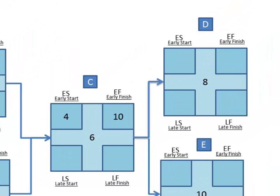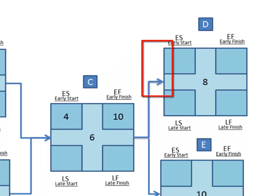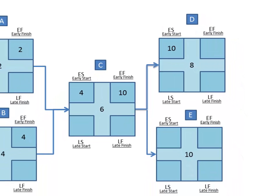So now we're up to Task D. D is waiting for Task C to finish, so the earliest D can start is day 10. This holds true for E as well, since it too is waiting on the completion of C, so we put a 10 in the early start for E. Combining the early start of D, which is 10, plus the duration of 8 gives us 18, and early start plus duration of E gives us 20. The last step in the forward pass is determining the earliest the project can end. Both D and E end the project, so you pick the higher of the two ending tasks, which is 20 days.